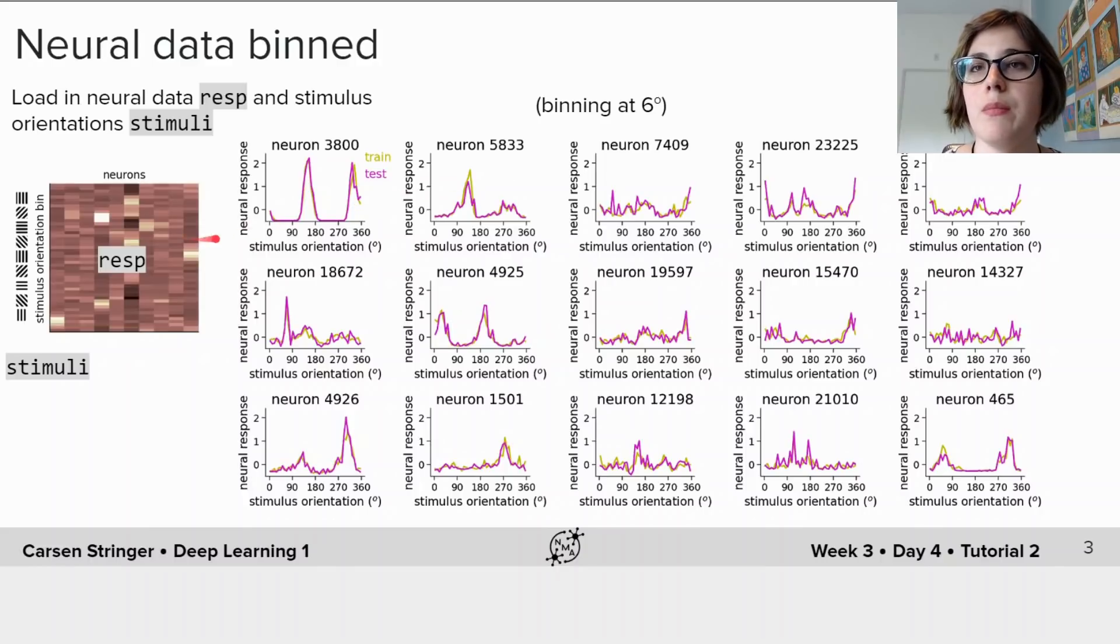So now that we've done this binning you can look at these different neurons' tuning curves. In some cases you can see two peaks in response to these stimuli. In some cases maybe you see more than two peaks, maybe you see three.